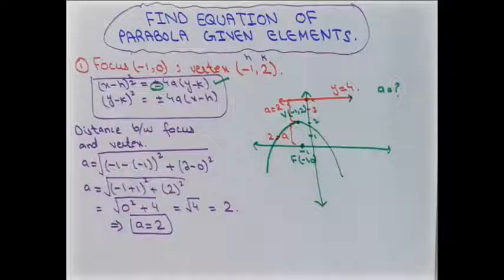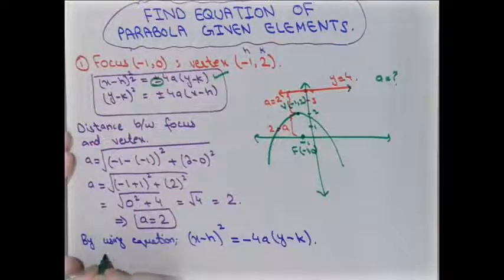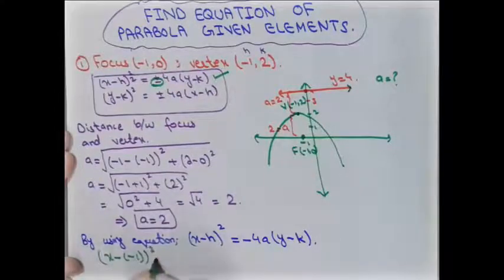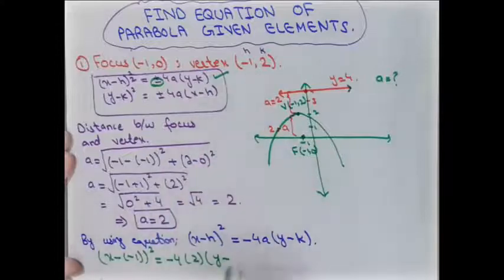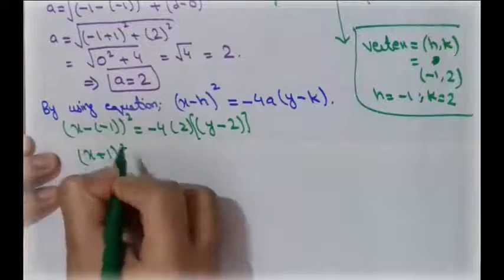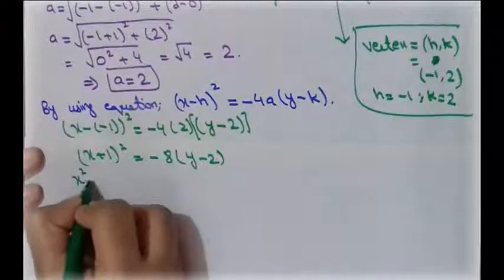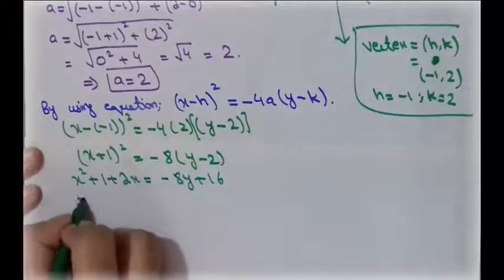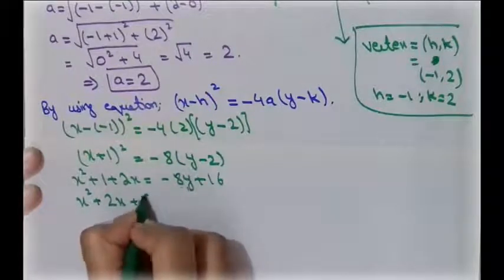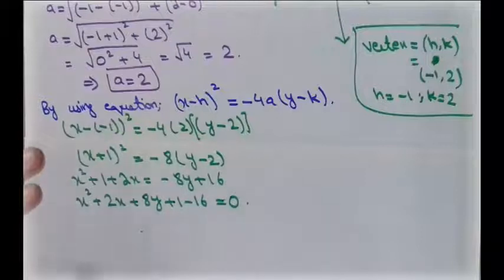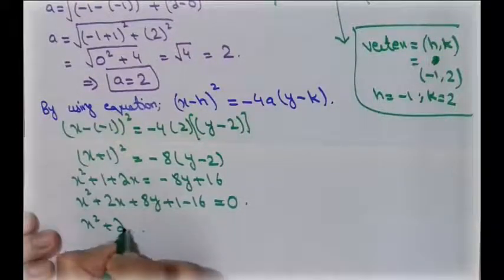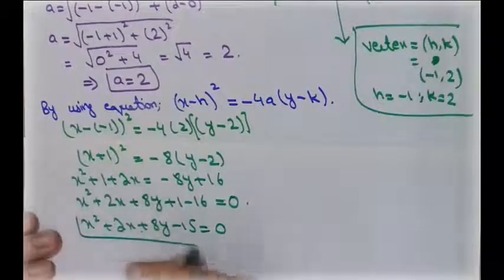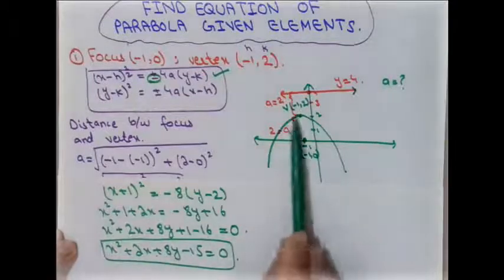Putting all values h = -1, k = 2, and a = 2 into the equation with the negative sign: (x - (-1))² = -4(2)(y - 2), giving (x + 1)² = -8(y - 2). Expanding: x² + 2x + 1 = -8y + 16, and rearranging: x² + 2x + 8y - 15 = 0. This is the required equation of the parabola.